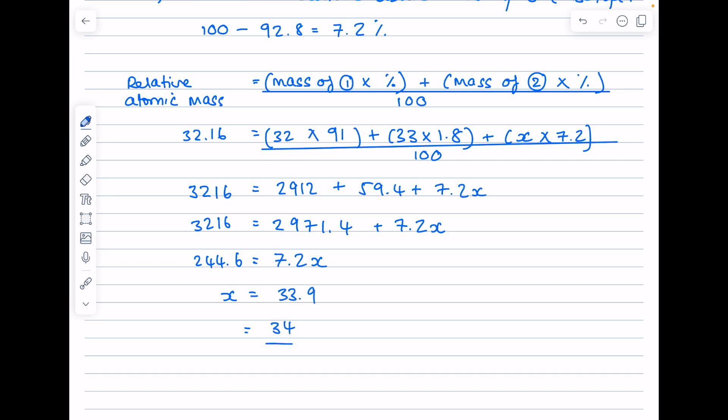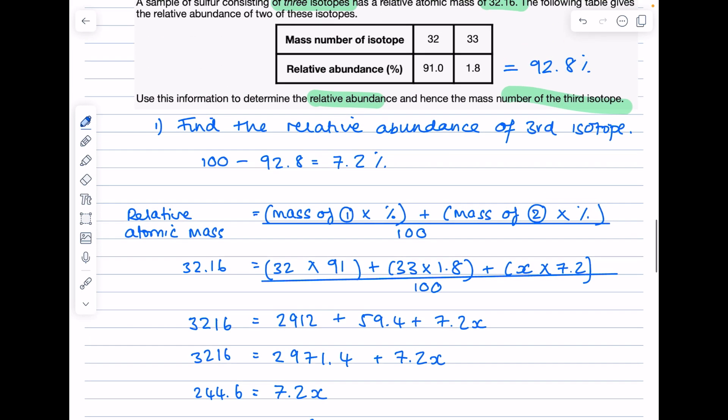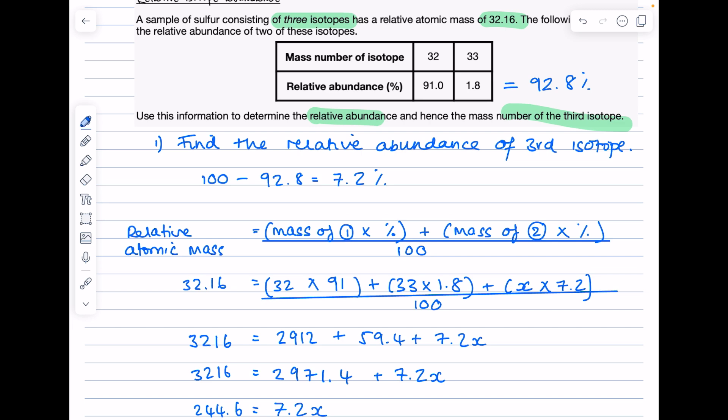The reason for that is because your answers should always be given to the lowest number of significant figures used in the question, which we can see is two significant figures.